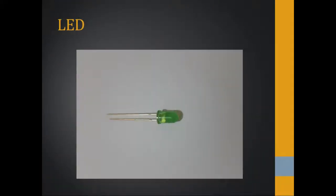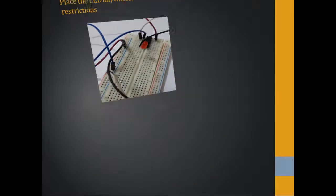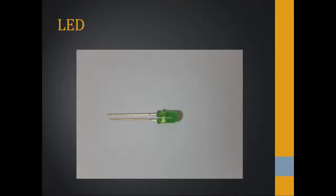An LED is going to be used, so place it accordingly as shown. Now, there is a slight cut on the side of the LED — that slight cut represents the negative terminal of the LED. If someone cannot see that, the longer leg represents the positive terminal and the shorter leg represents the negative terminal of the LED.